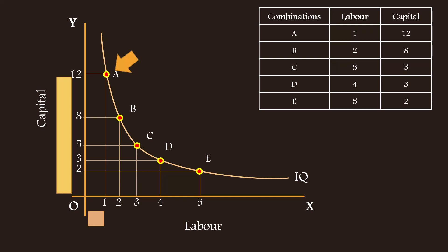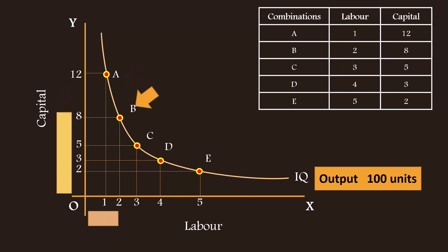For example, to begin with, the producer is at point A. He combines 1 unit of labor with 12 units of capital. He produces 100 units of output. He moves down to point B. He reduces the capital by 4 units. He has only 8 units of capital now. With reduction in capital, the output falls by 10 units.